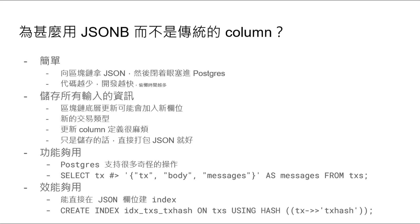最近更新好像多了一個Transaction Tips之類的東西。如果你用傳統的SQL Column的話，你要做Alter Table Add Column，然後你還要做Migration。很多時候你只是想把它記下來，並不會做複雜的查詢，那直接塞進JSON就很方便。